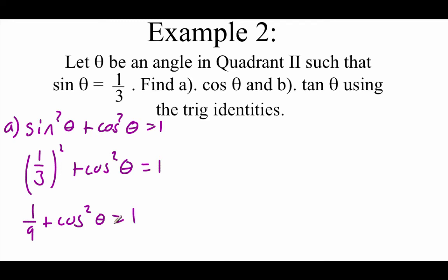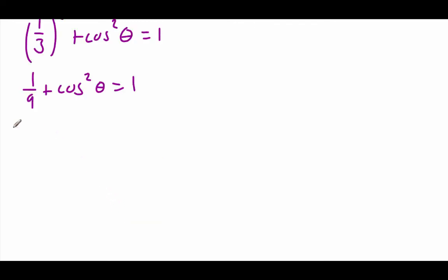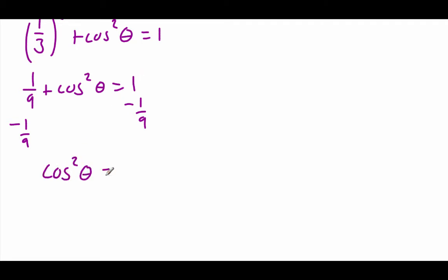Now we're going to solve to get cosine all by itself. I'm going to subtract the 1/9 over to the right-hand side. We're going to need common denominators, so this is going to be like 9 ninths. So if we do that subtraction, the cosine squared ends up being 8 ninths.